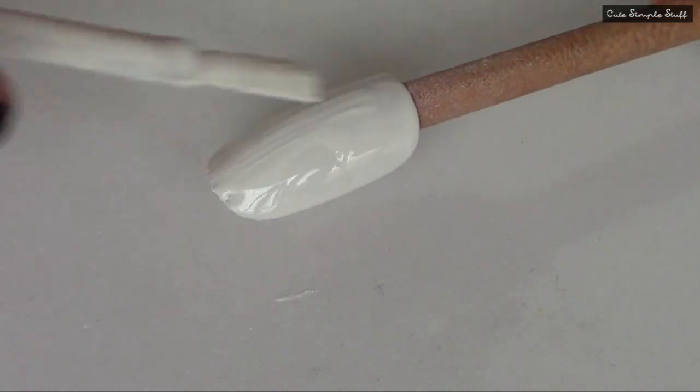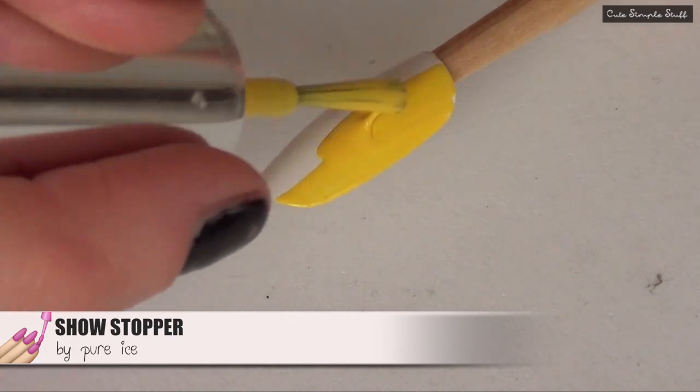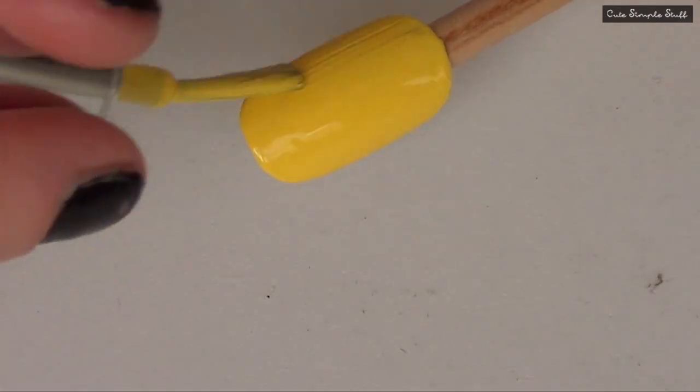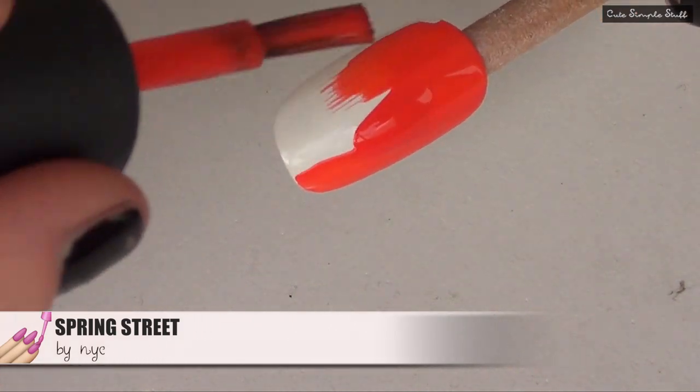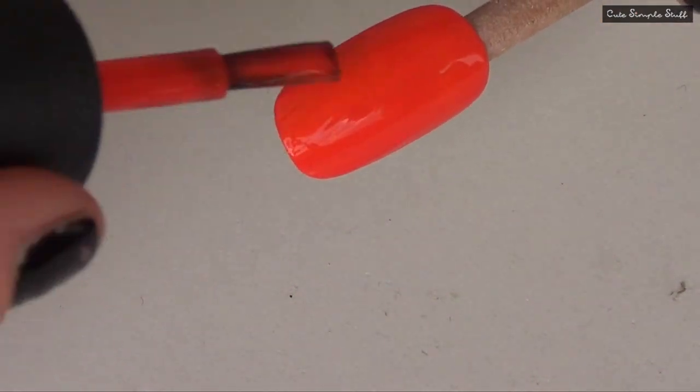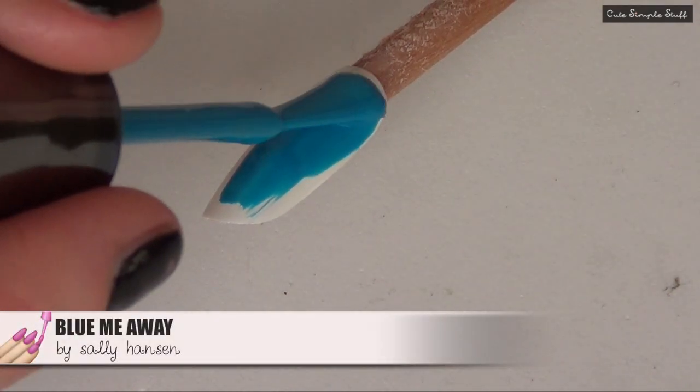Once we have that, we're going to be painting the actual color. In this case, I'm using yellow, and then I'm using some kind of orangey red, more on the orange side. You can use whatever color you want.